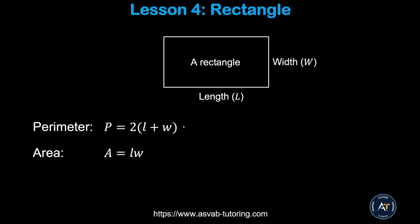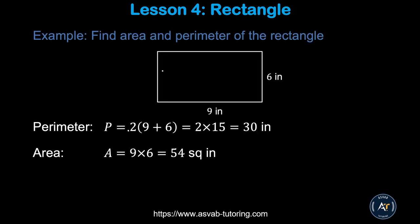First, we'll learn how to find area and perimeter of a rectangle. A rectangle is a four-sided shape and its opposite sides are the same. The perimeter is 2 times (l plus w) and the area equals length times width.